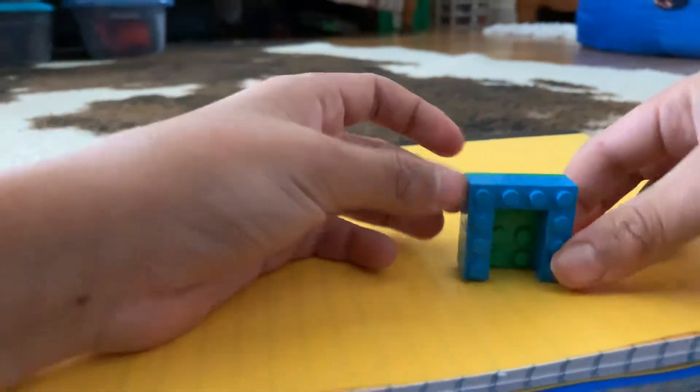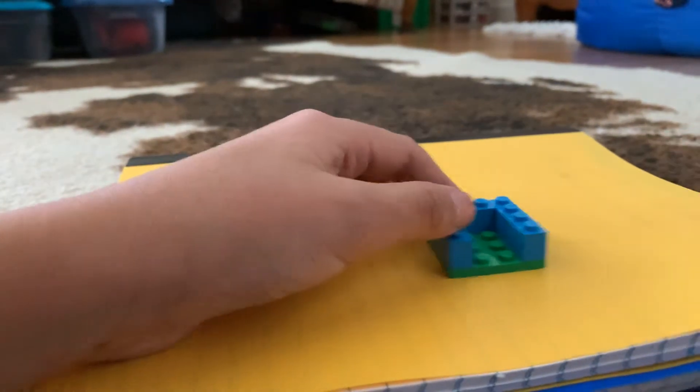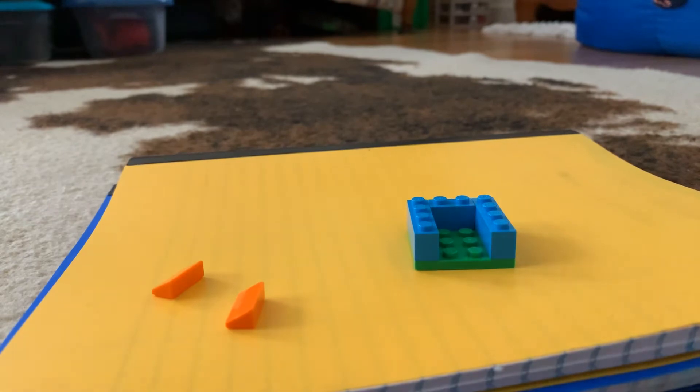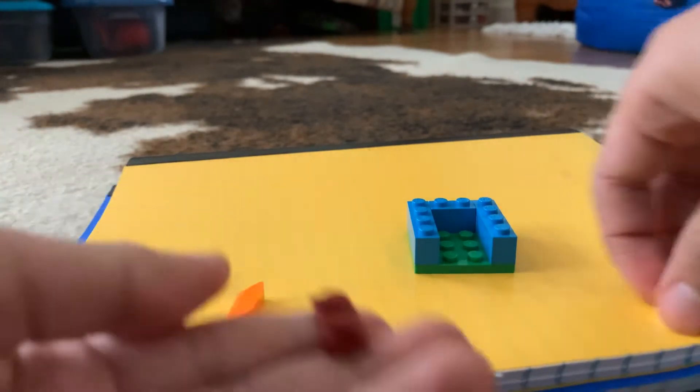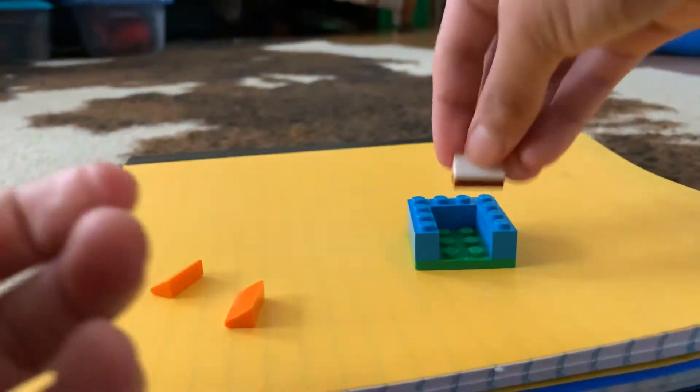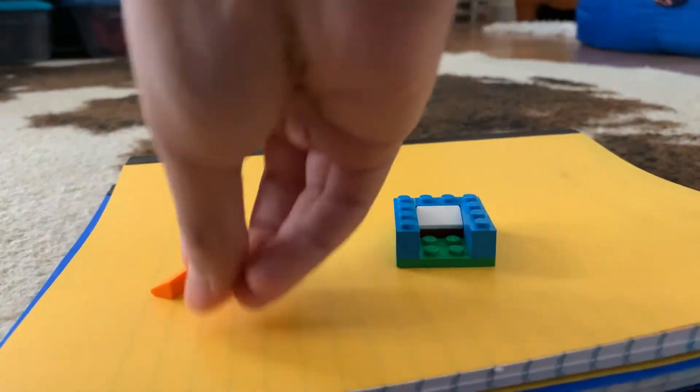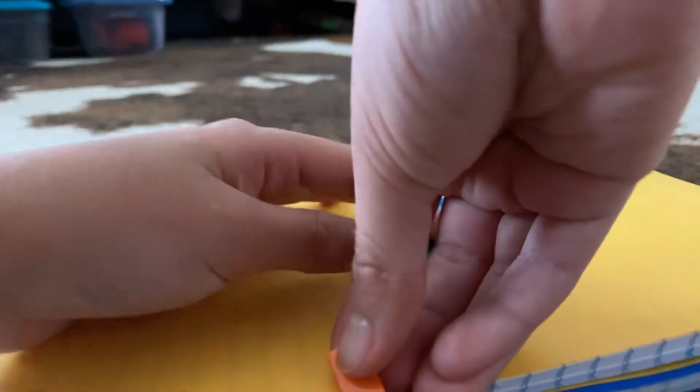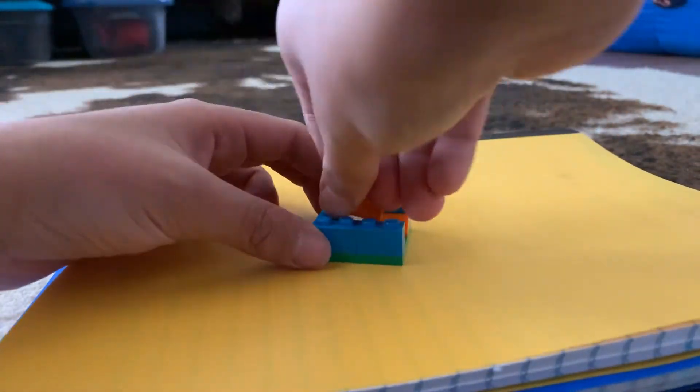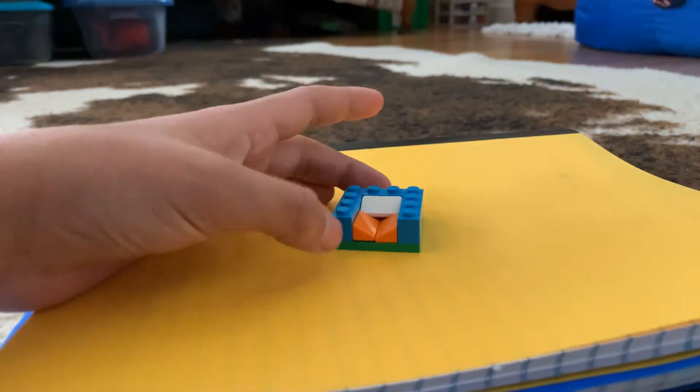So now you have this. And next, you want to take two of these slopes and then one more slope. And you're going to take a 1x2 flat and place it right here, and place it in the back. And you're going to take one slope orange and then another slope that's orange. So now I have this.